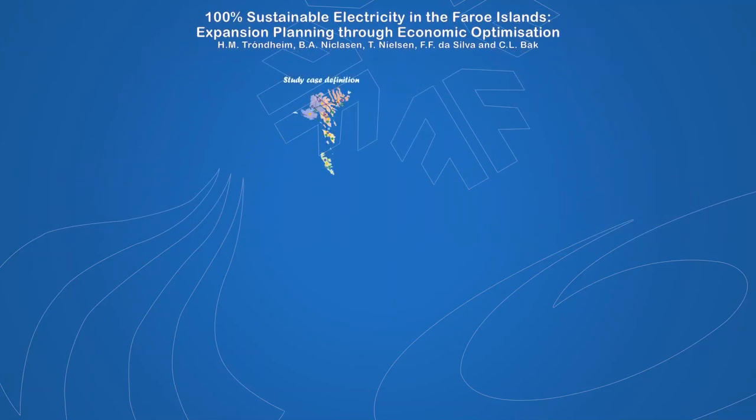The first step in the applied methodology is to define the study case — in this case the Faroe Islands, which are aiming for a 100% sustainable electricity sector by 2030. This information is used as input to Balmorell, which is an economical optimization tool used for expansion planning.